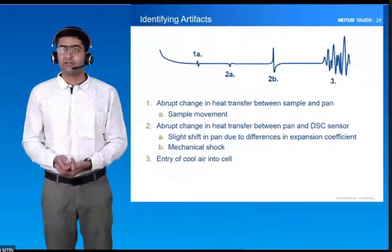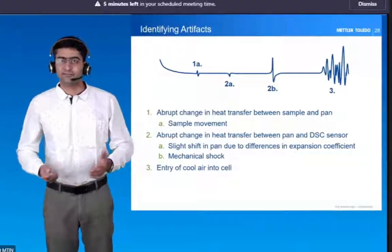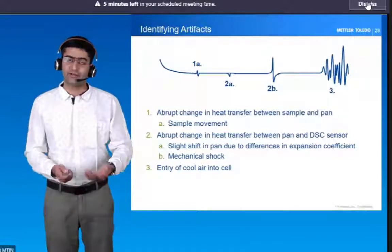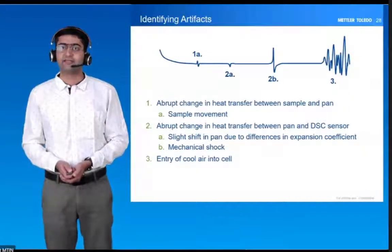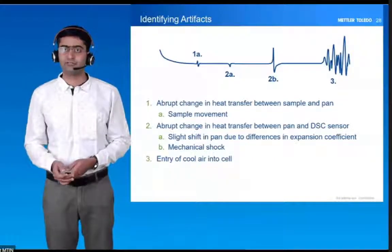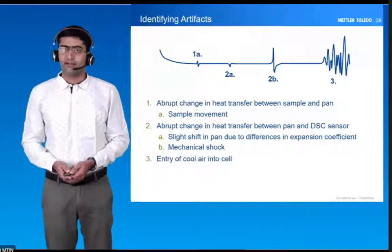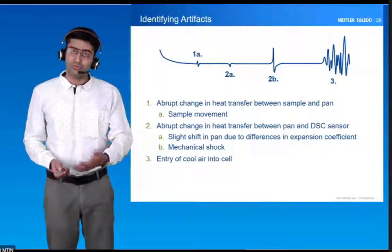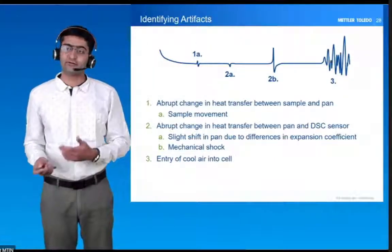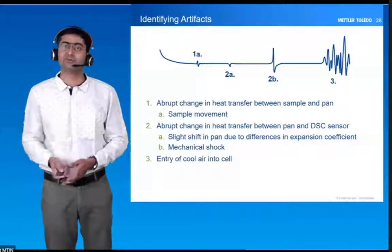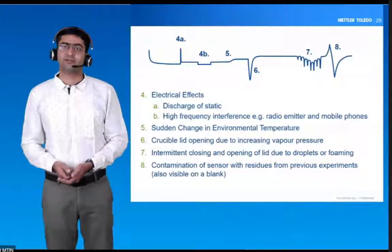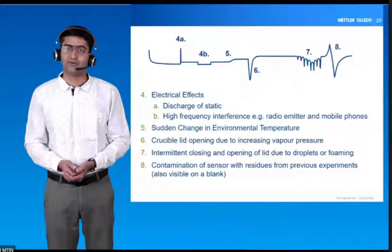If there is a mismatch in the expansion coefficient of your sensor and your pan, you will have this kind of artifact. Then, mechanical shock — if the table was moved or some sudden impact occurred — will also cause artifacts. Entry of cool air will also cause artifacts, which is why it is recommended that your DSC should not be in front of a door or just below your air conditioner. A discharge of static charge or high-frequency interference will also give you this kind of artifact.